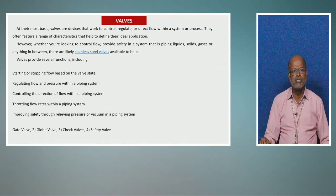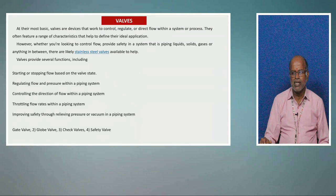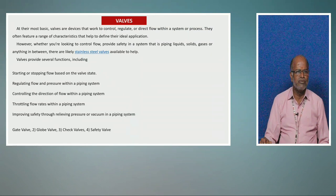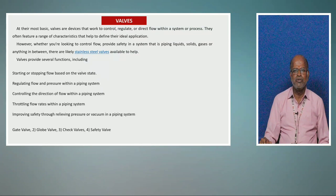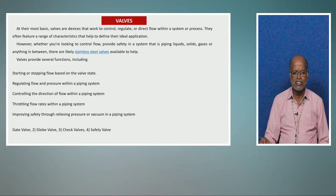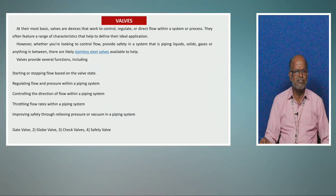What is the purpose of a valve? A valve is a device used to control and regulate the flow in a system or process. There are various types of valves with different functions. A valve can be used to control liquids, solids, gases, or anything in between. Some valves are made of stainless steel and some are made of PVC — the material differs.